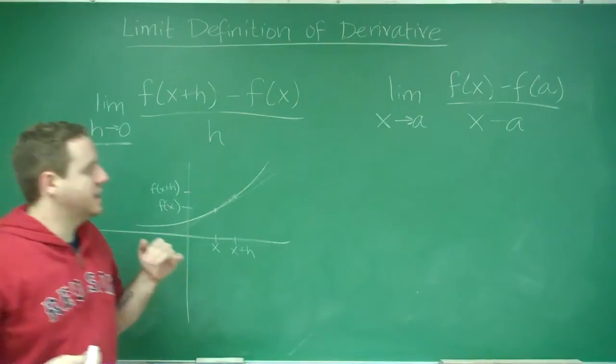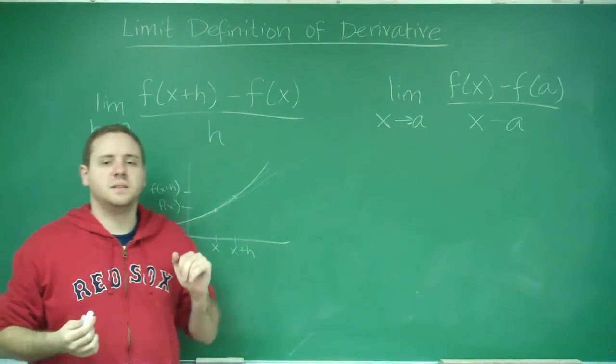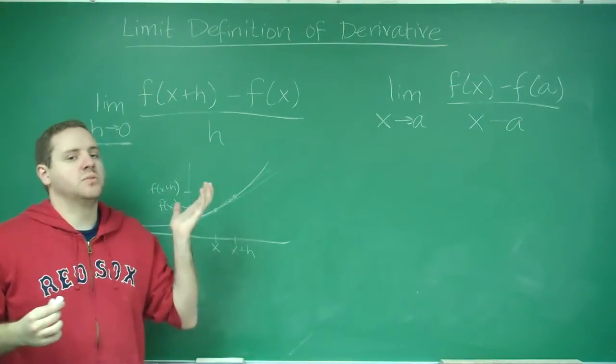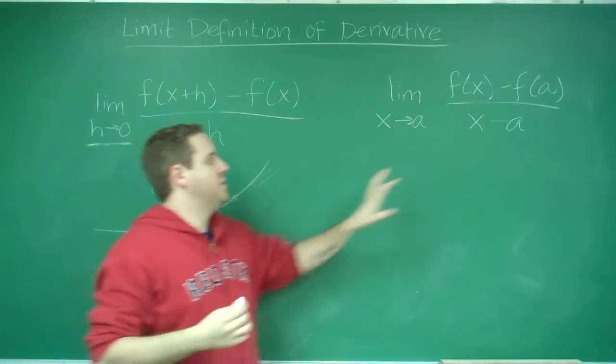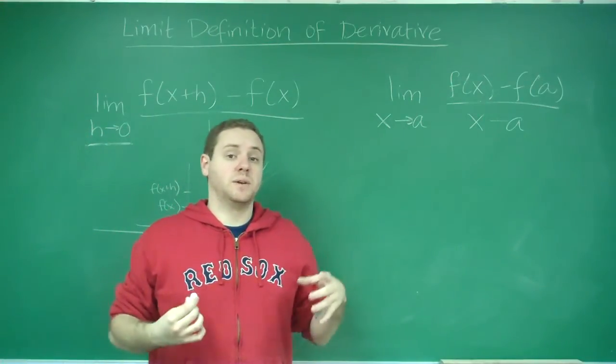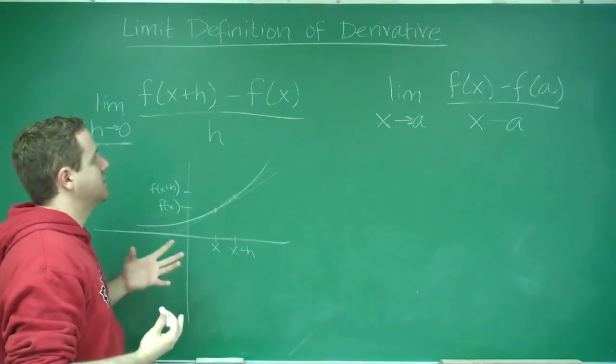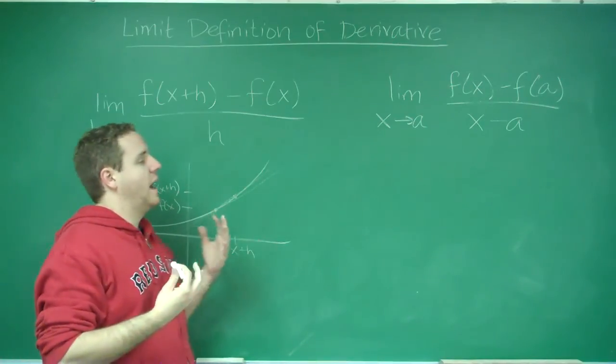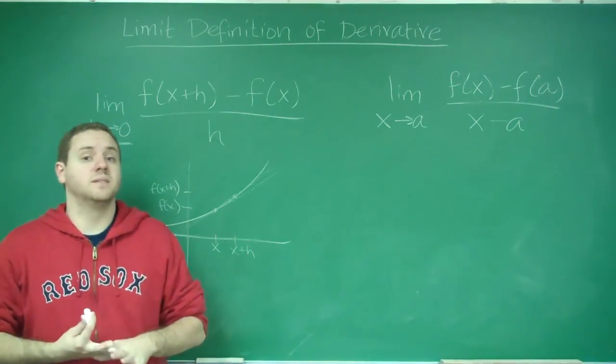Now these formulas are basically the exact same thing. This one just gives you a general derivative of a function, while this one gives you the derivative at a specific point. So evaluating these limits are how you find the derivative using the limit definition.